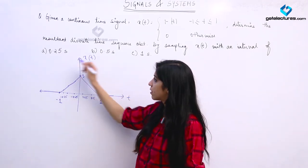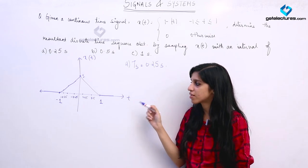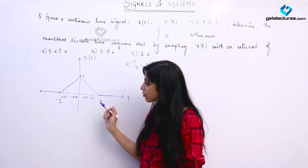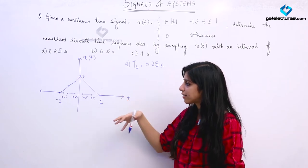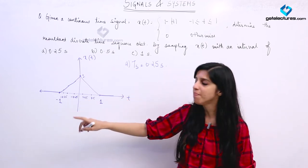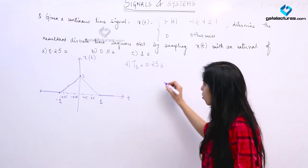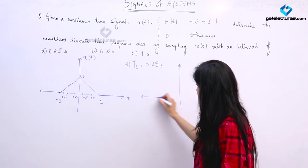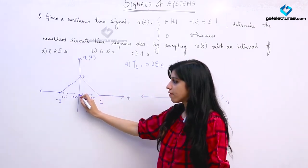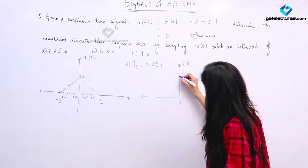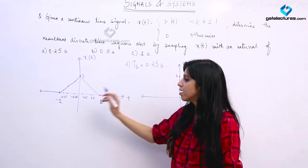In the first part, the sampling interval is 0.25 seconds, which means we take samples of the signal at intervals of 0.25 seconds each. If we take samples that way, we are going to have 9 samples: 4 samples for positive t, 4 samples for negative t, and one for t = 0. First sample at t = 0 has value 1.